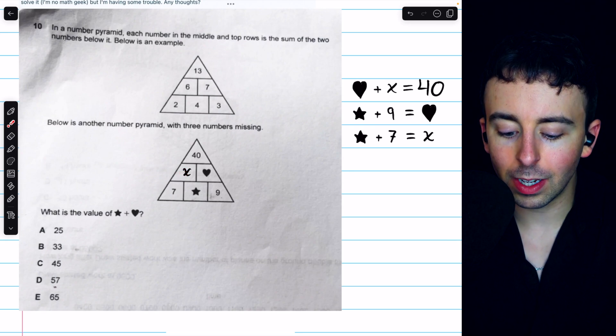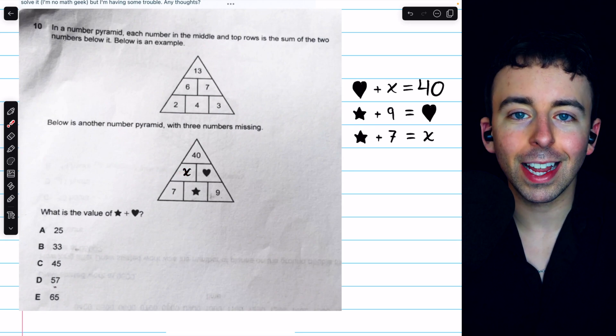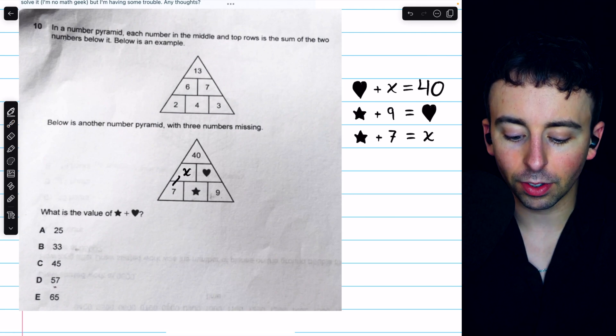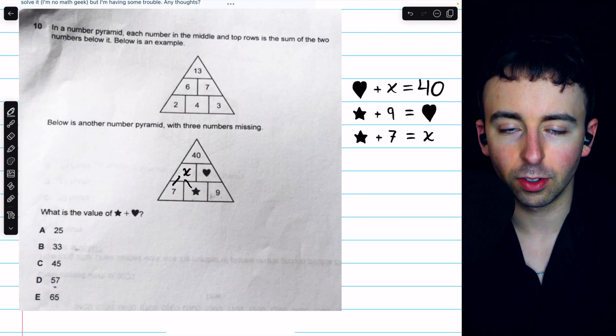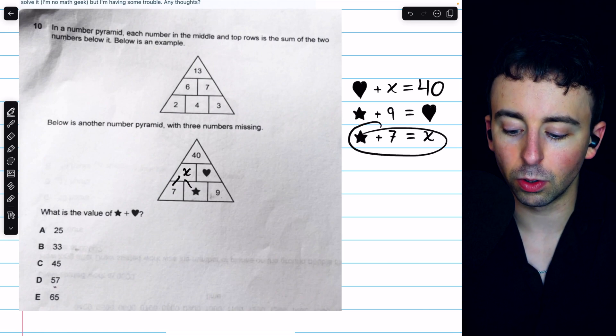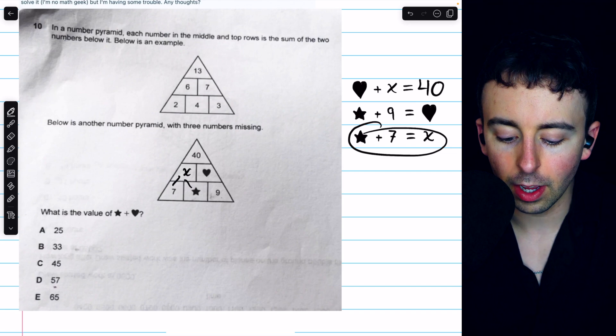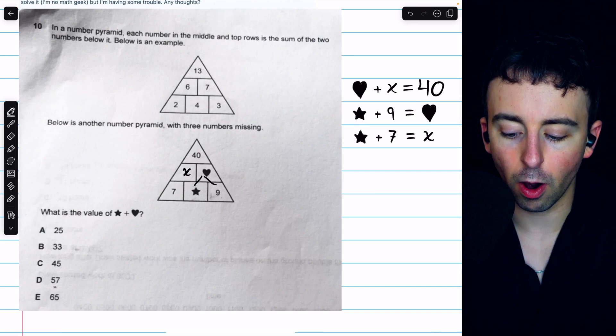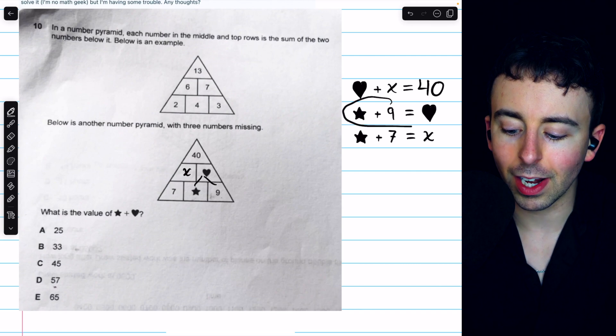Now if we go down a row to x and heart, we can write an equation for both of those as well. We know that x must equal 7 plus star, those two cells that are directly below it. So we write that here. x is equal to 7 plus star. We also have for the heart that the heart must equal star plus 9. So we write that there.